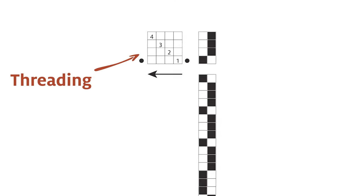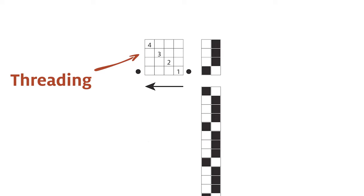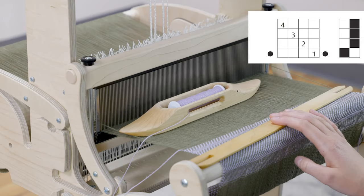Threading is given at the top left. This is the first piece of information we use to set up a loom, telling us how to thread the heddles. Each shaft has its own line, starting at the bottom row with the first shaft. Read the threading from right to left as the arrow indicates.